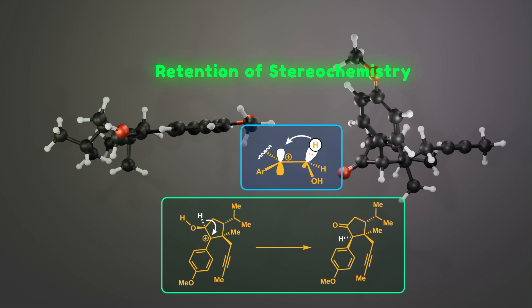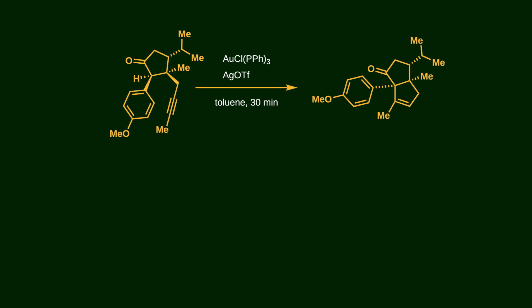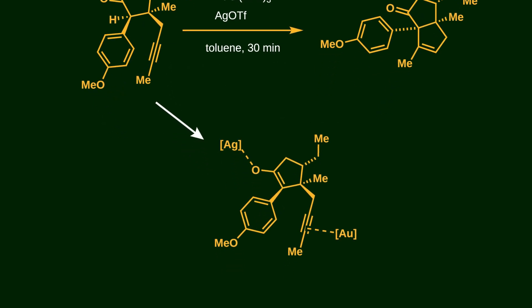The next step is Conia-ene cyclization. Both gold and silver complexes are used to create the five-membered ring, so it's basically a dual mode of activation. On one side, silver triflate coordinates to the oxygen atom, converting it into the enol form. On the other side of the molecule, the gold complex activates the alkyne. So we've got a nucleophile enol and an electrophile alkyne. As a result, the five-membered ring is constructed through a 5-exo-dig ring closure.